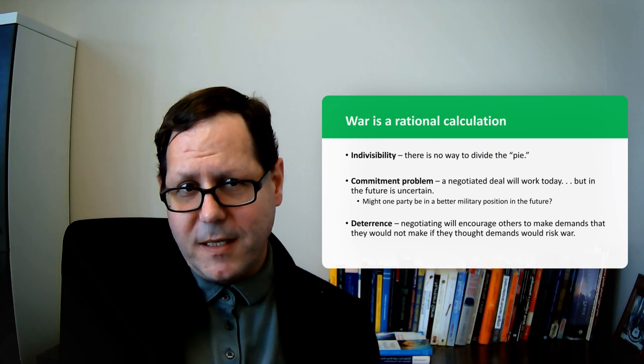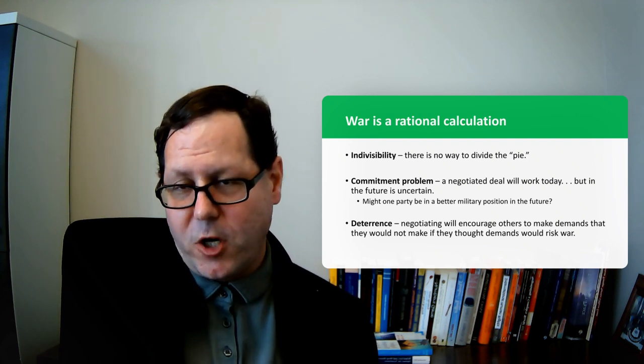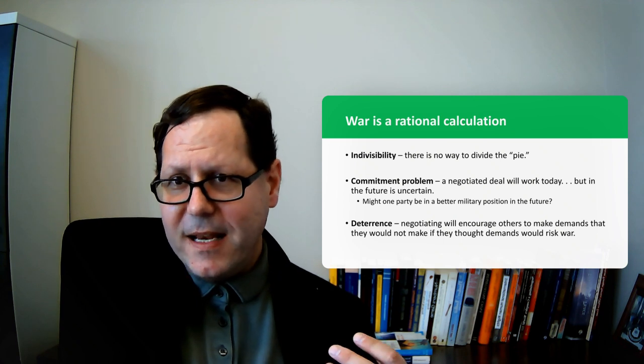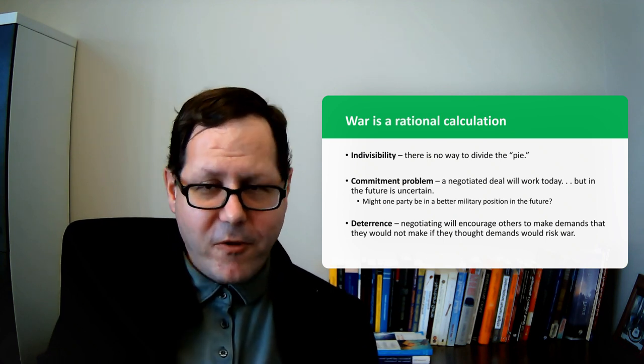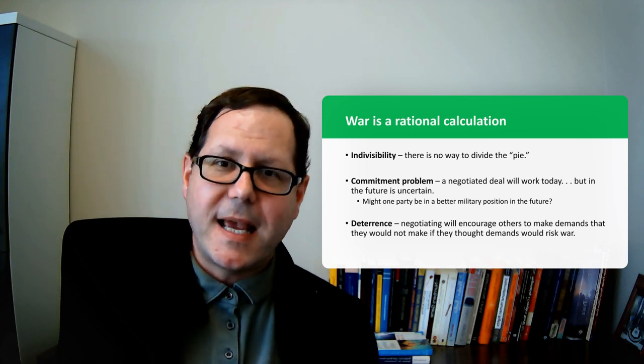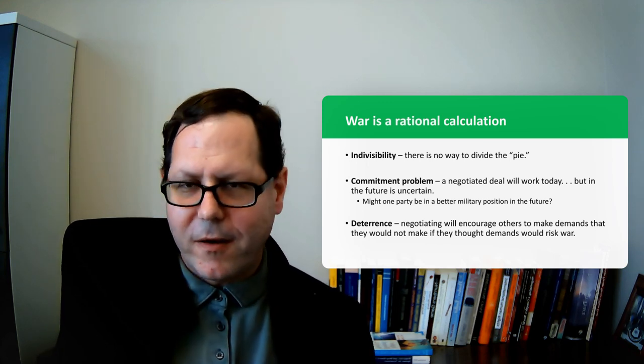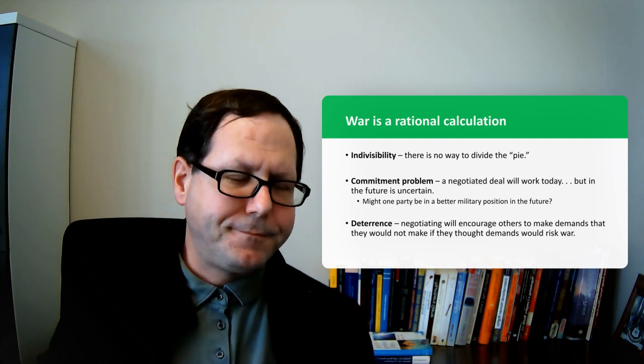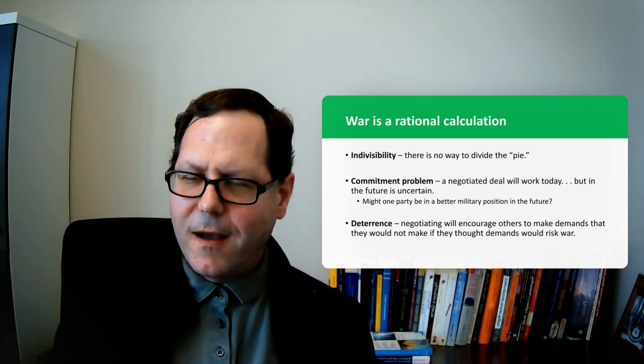Then there was the request to seize a chunk of territory from Czechoslovakia, and Britain and others meet with Hitler in Munich, and Hitler says, yes, this is the very last issue. I'm not going to take any more. Once I get this chunk of Czechoslovakia, I'm satisfied. They cut a deal with Hitler. He takes that chunk of Czechoslovakia and then rolls into the rest, and then moves on Poland.